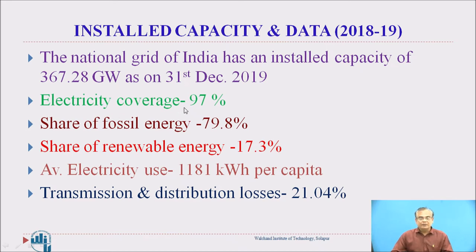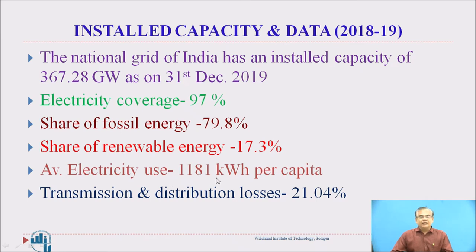Electricity coverage in our country is almost 97%. Out of the total share, non-renewable fossil energy accounts for 79.8%, and the share of renewable energy is 17.3%. The average electricity consumption per capita in our country is 1,181 kilowatt-hours. Transmission and distribution losses are around 21.04%. This data is from 2018-19.